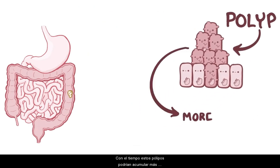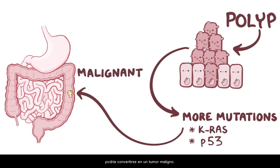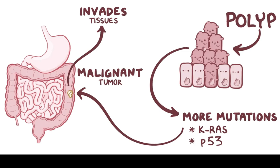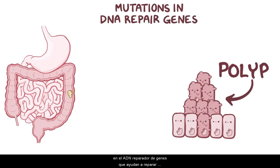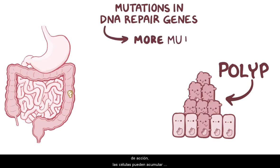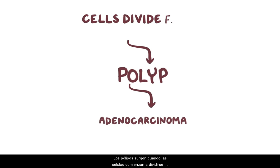Over time, these polyps might accumulate more mutations in other tumor suppressor genes, like the KRAS gene or the p53 gene, and ultimately might become a malignant tumor, meaning that the cells might be able to invade neighboring tissues. Another well-known example are genetic mutations in DNA repair genes, which help fix up mutations in cellular DNA. When they're out of action, cells accumulate mutations and over time can develop into polyps, and eventually adenocarcinomas. Broadly speaking, adenocarcinomas are the malignant evolution of polyps, and polyps arise when cells start dividing faster than usual.